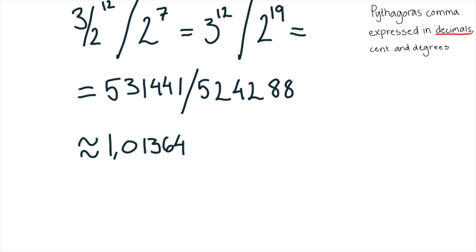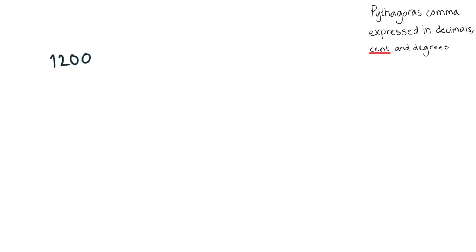And if you want to write it in an easy way, you could write it in cents. But first you have to know that an octave has 1,200 cents. So 1,200 times logarithm 2, 531,441 with 524,288 which becomes 24 cents.